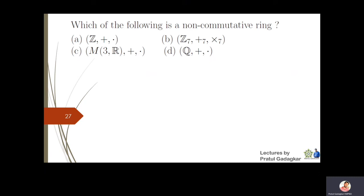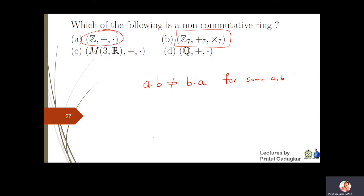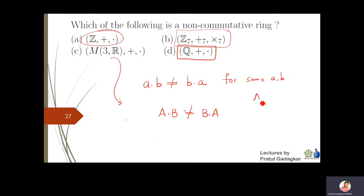Next question: which of the following is a non-commutative ring? A non-commutative ring has a·b ≠ b·a for some a, b. Integers are commutative, Z7 is commutative, and rational numbers under multiplication are commutative. For M3R, matrix multiplication need not satisfy AB = BA. So M3R with respect to addition and multiplication is a non-commutative ring.